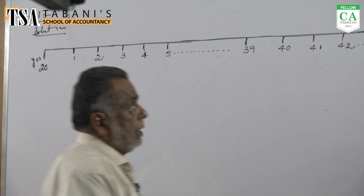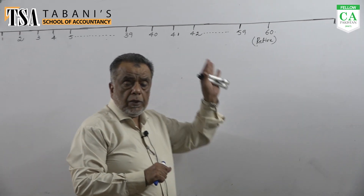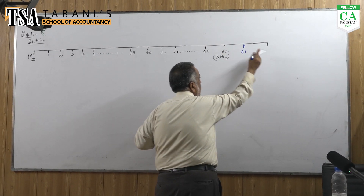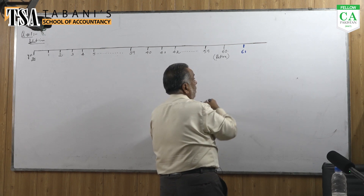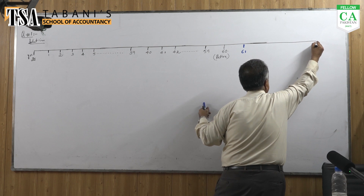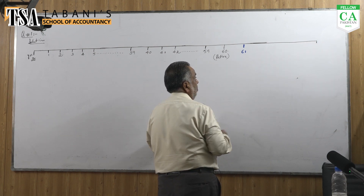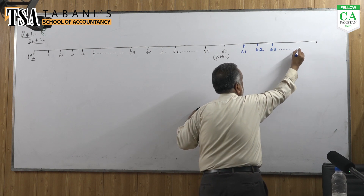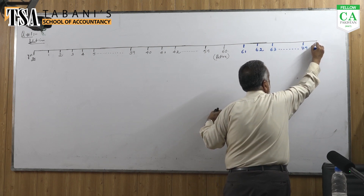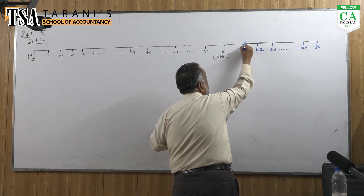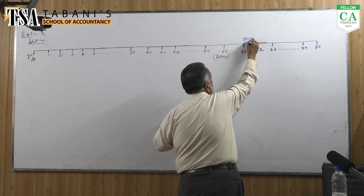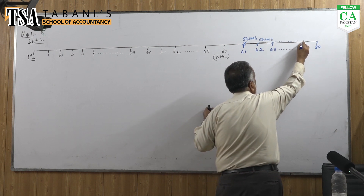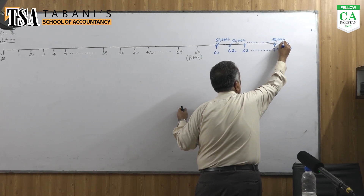What does he want? Mr. Ahmed wants — from the 60th year onwards, using a blue marker — from age 60 to when he reaches 80, he gets 50,000 per year. That means from year 61 to 80 he receives 50,000 each year. This is straightforward — are we clear? Yes, sir.